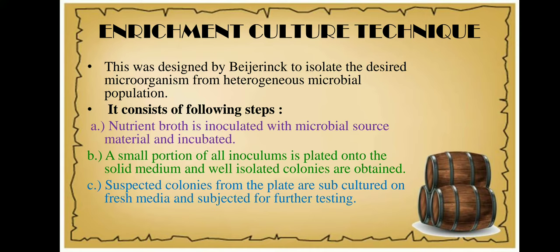In the first step, we prepare a nutrient broth with an unusual substrate. For example, I will take cellulose powder as an unusual substrate. If I have to isolate an organism which produces the enzyme cellulase, then I am going to choose cellulose powder as my substrate.